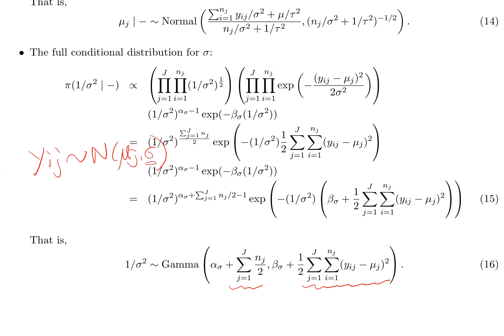Not surprisingly, to update sigma in the Gibbs sampler, you have to look at all of the data. The first parameter is essentially n, the total number of observations, divided by two. The second term has two summations—you're going through each observation in each group, taking the squared deviation from the mean, then summing them up. Essentially, you're going through all observations.